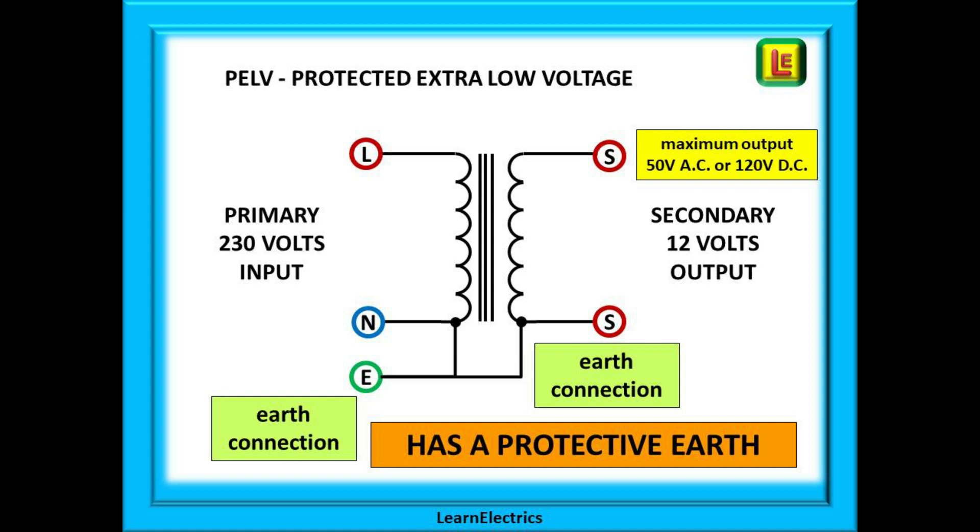Because the secondary side has an earth connection, there is now the possibility that a single fault on the output side might give you an electric shock as any fault current now has an earth path to travel along. But as the voltage is limited to ELV values, any shock should be minimal and survivable. Lighting and appliances connected to PELV transformers are generally not suitable for installation in the restricted zones of bathrooms etc. because of this earth connection.